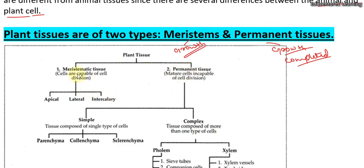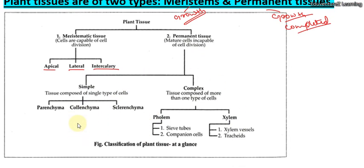Further, we divide meristematic tissue into three parts. Meristematic tissues are of three types: apical, lateral, and intercalary. We will have a detailed discussion about each of these — what is apical, what is lateral, what is intercalary — with the help of pictures.